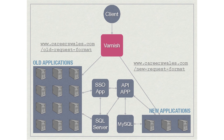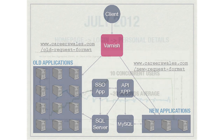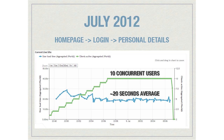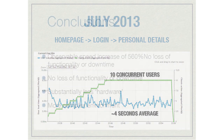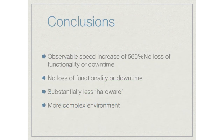So that's how it looks now: clients come in, Varnish directs to the applications, with SSO and API stacks and data stores in the middle, and substantially less hardware on both sides. In July 2012 with 10 concurrent users, we had a 20-second average. In July 2013, the same exact test: down to four seconds. That's a 560% increase in performance, which the client was very happy with — with no loss of functionality or downtime, because it was completely transparent.